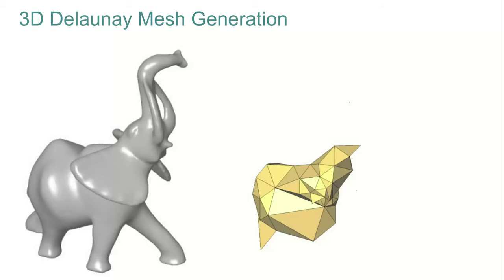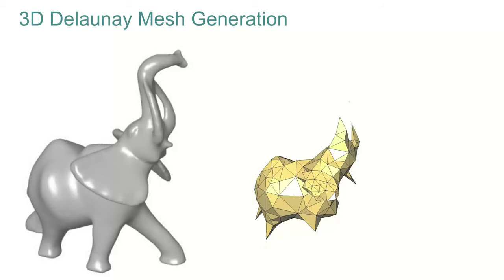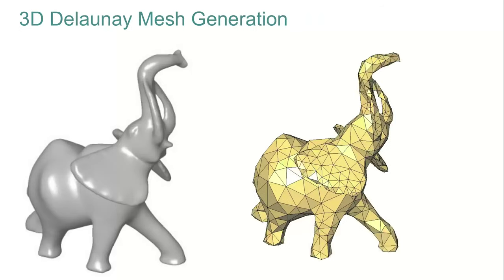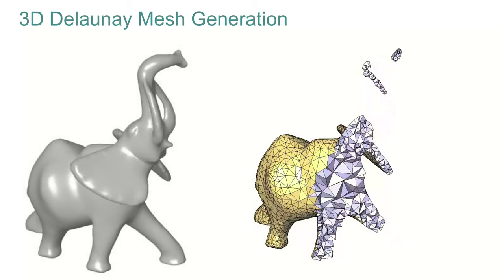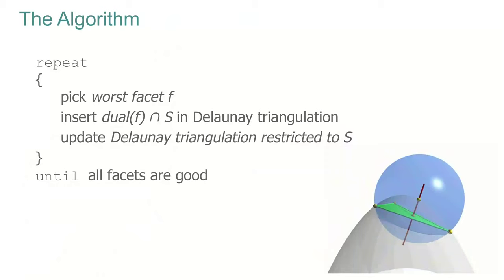We continue with extra rounds of iterations until we are satisfied with the quality of the mesh. To summarize the algorithm: pick the worst surface facet, insert the intersection of its dual with the surface, update the marks on tetrahedra that are inside or outside, and repeat until all surface facets are good.